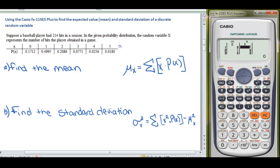This is where we're going to enter in our p of x. So we have 0.1712, 0.4995, 0.2086, 0.0771. The probability of 4 hits in a game is 0.0256, and the probability of 5 hits in a game is 0.0180.